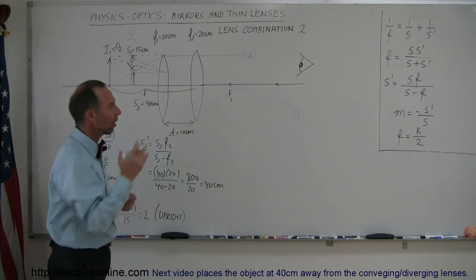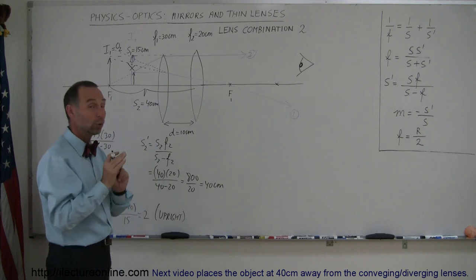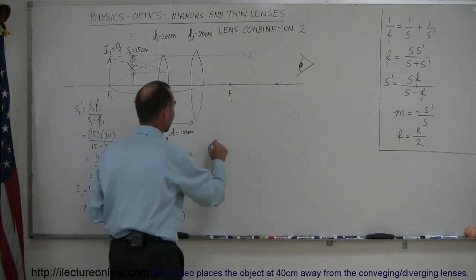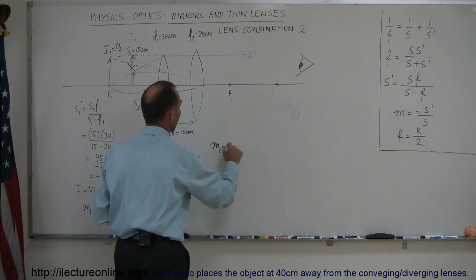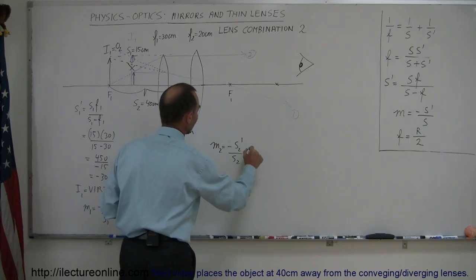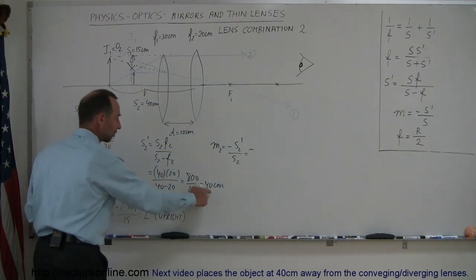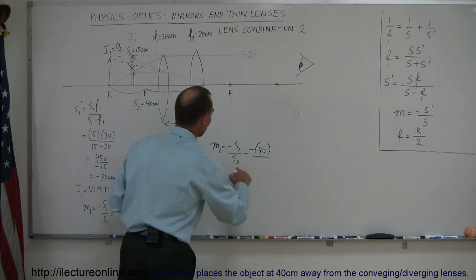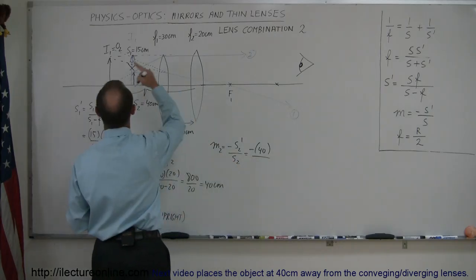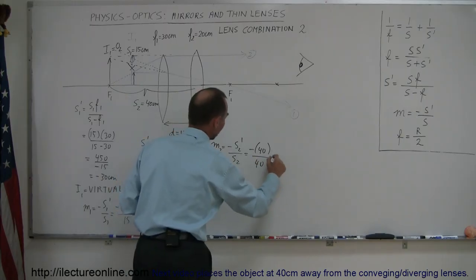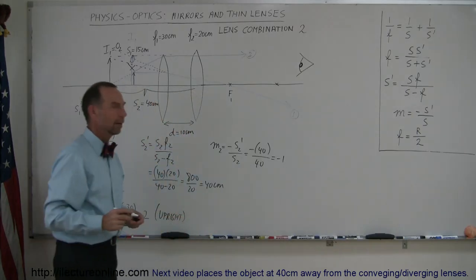Now the question is, is the image upright or upside down? We don't know that yet. We'll have to find out first by taking the second magnification equation, so M2 is equal to minus S2' over S2, so that's a minus. S2' was a 40 centimeters, so minus 40 divided by S2. S2 was 40 centimeters, I believe, right? Right there, 40 centimeters, and so this is equal to minus 1.